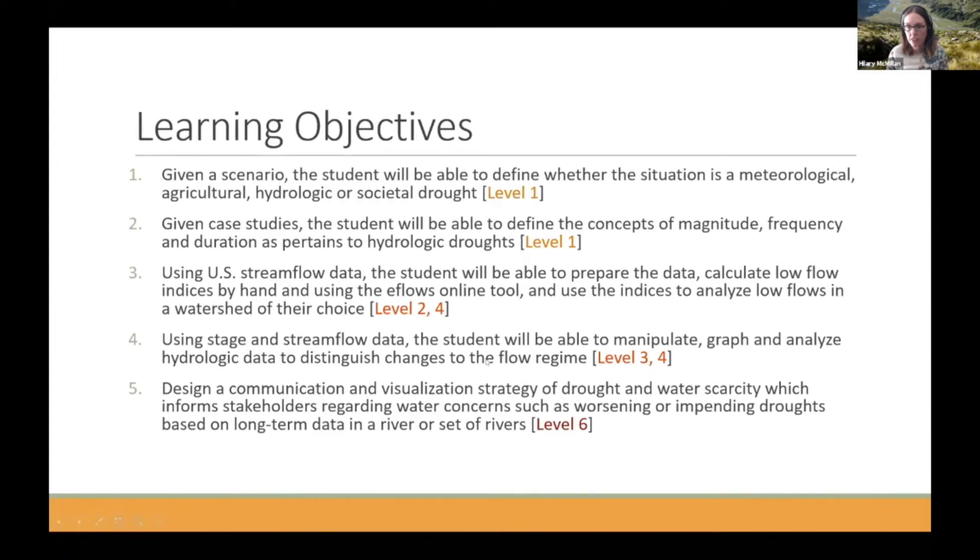We then have two higher level objectives which are more about processing the data to be able to understand how low flows change over time. And we then have a final objective which is at a higher level where the students present the work that they've done and use different visualization techniques to describe how droughts have been changing.